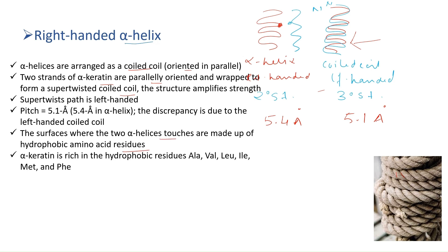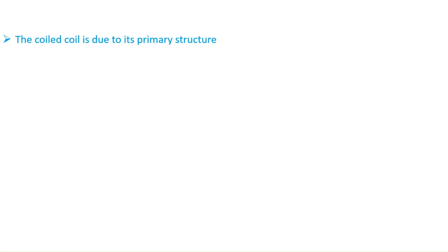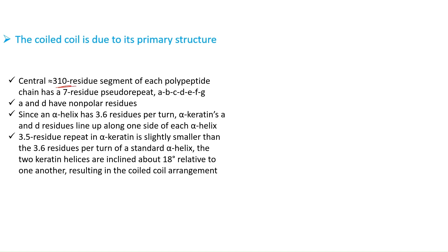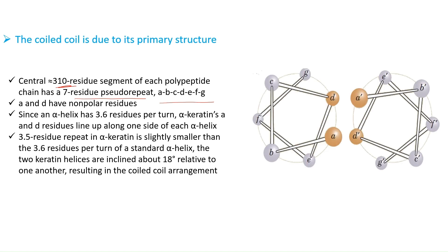The surface where the two alpha helices touch is made up of hydrophobic amino acids, confirming that alpha keratin — as a fibrous protein insoluble in water — consists mainly of hydrophobic residues. The coiled-coil structure forms because of the primary structure: the central region of each polypeptide is approximately 310 residues, and within these residues there is a seven-residue pseudo-repeat: a, b, c, d, e, f, g.